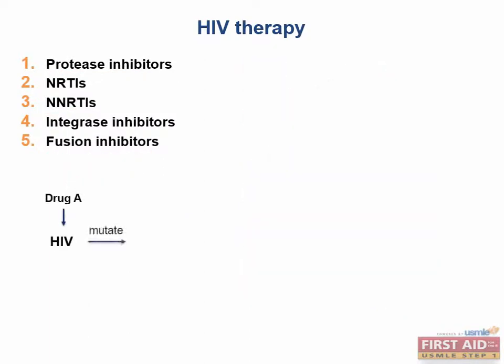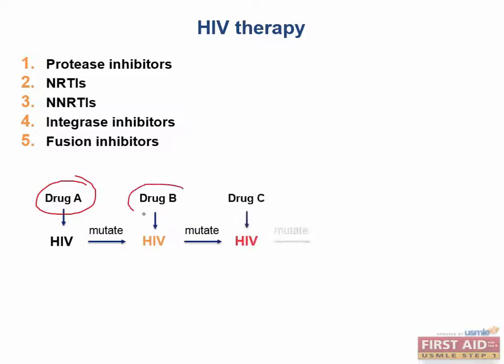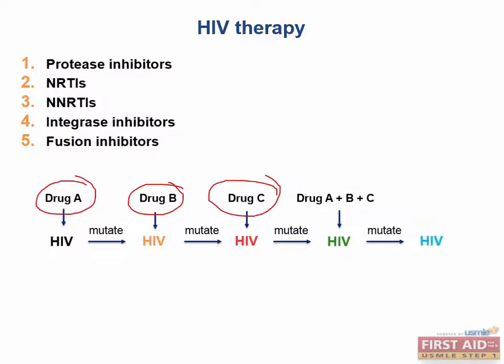Say we have an HIV virus — we treat it with drug A, it mutates, we treat it with drug B, it mutates, we treat it with drug C, and on and on. However, what if we gave drugs A, B, and C all at the same time? By giving multiple medications with different mechanisms of action — what we call drug cocktails — we enable ourselves to attack the virus from different angles to prevent it from mutating by killing it first.